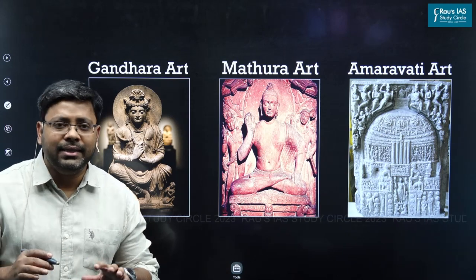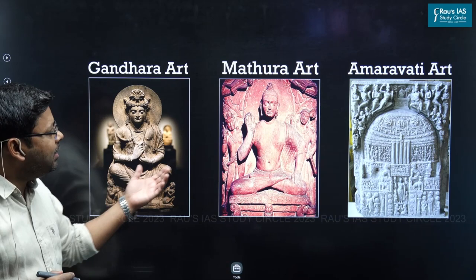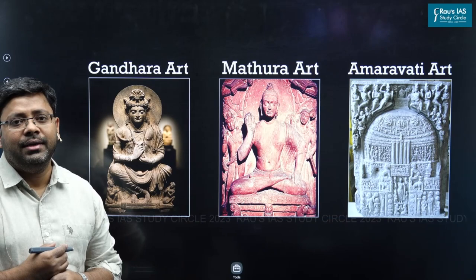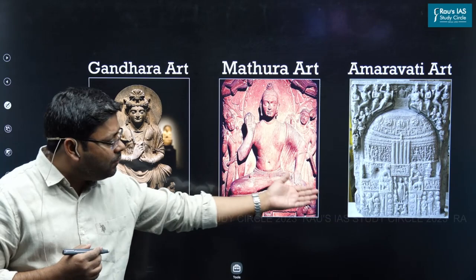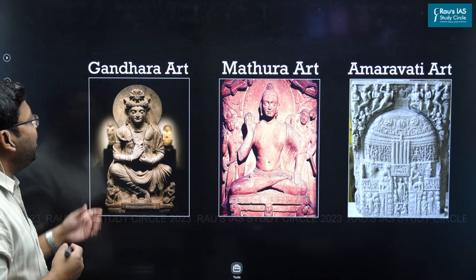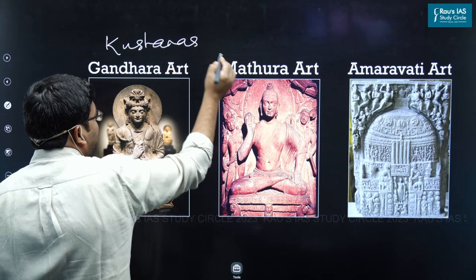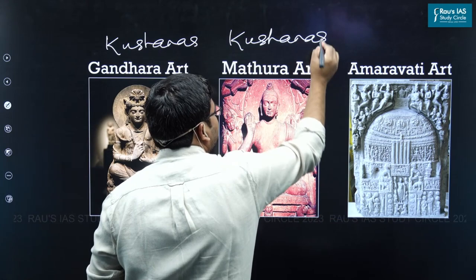In this session, we are going for a comparative analysis of Gandhara art, Mathura art and Amaravati art forms of sculpture. The first basic information is that all three art forms developed in the post-Maurian age. The Gandhara art and Mathura art were mainly patronized by the Kushanas, while the Amaravati art form was mainly patronized by the Satvahanas.